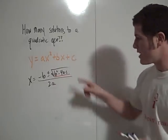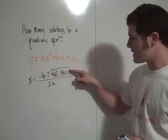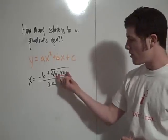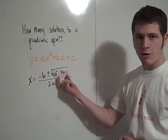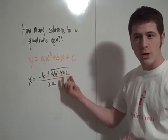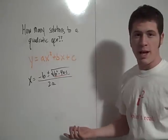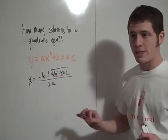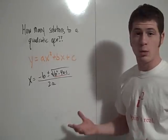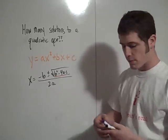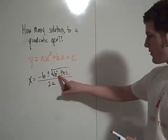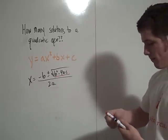Because if b squared minus 4ac is negative, then you have a negative number under the square root, which is an imaginary number — it's a complex number — and we say that's not a real solution. So b squared minus 4ac, that's called the discriminant.